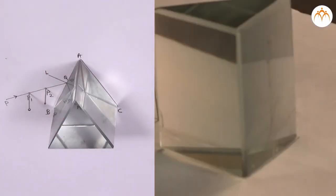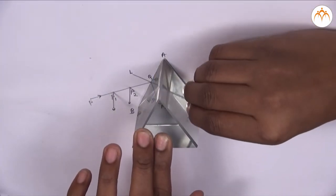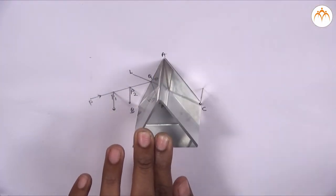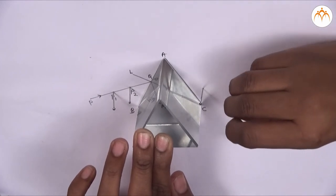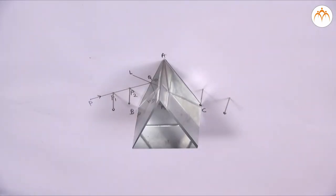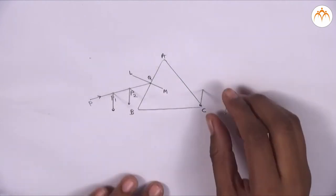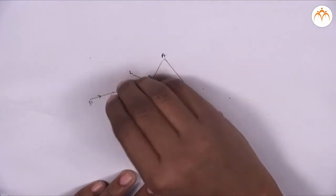Look at the images of P1 and P2 through the side AC. Fix two more pins P3 and P4 on this side such that pins P3 and P4 and images of P1 and P2 appear to be on a straight line. Remove the prism and pins.